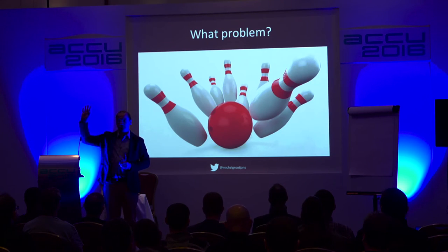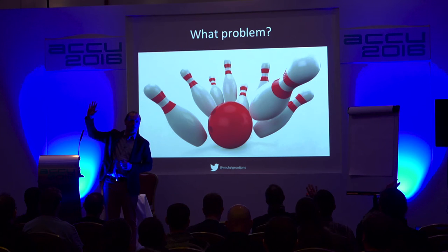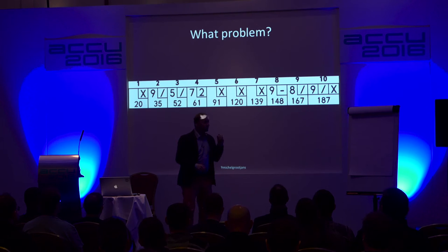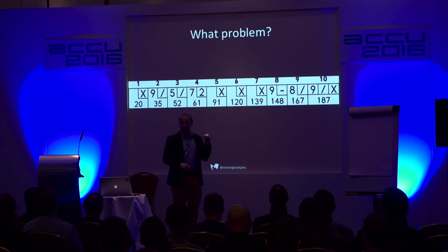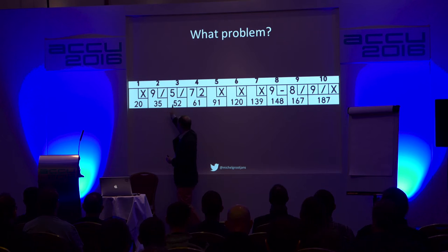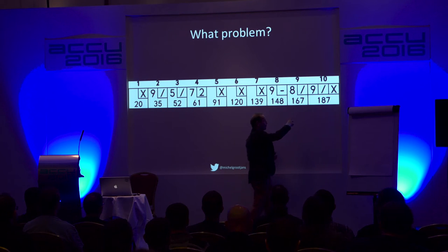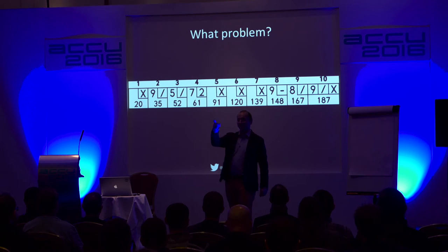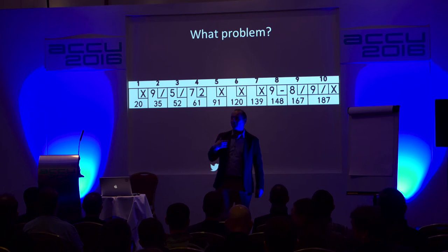So what problem are we going to solve? You might be familiar with Uncle Bob's typical exercise — the bowling game. Who knows this exercise? Who knows how these numbers work? So I have this, then that, then this, and at the end I reach 187. Who can explain this?